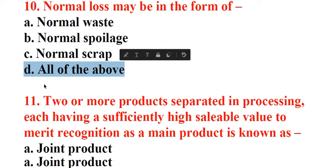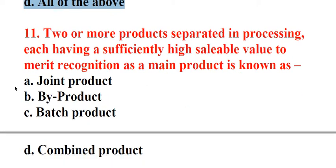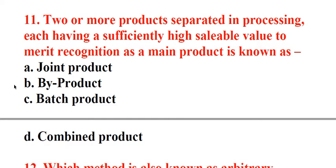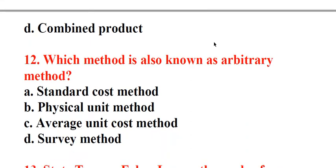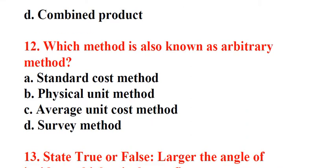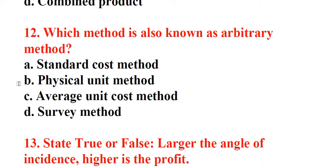Question 11: Two or more products separated in processing, each having a sufficiently high saleable value to merit recognition as a main product is known as. A. Joint product, B. By-Product, C. Batch product, D. Combined product. Answer: A. Joint product. Question 12: Which method is also known as arbitrary method? A. Standard cost method, B. Physical unit method, C. Average unit cost method, D. Survey method. Answer: D. Survey method.